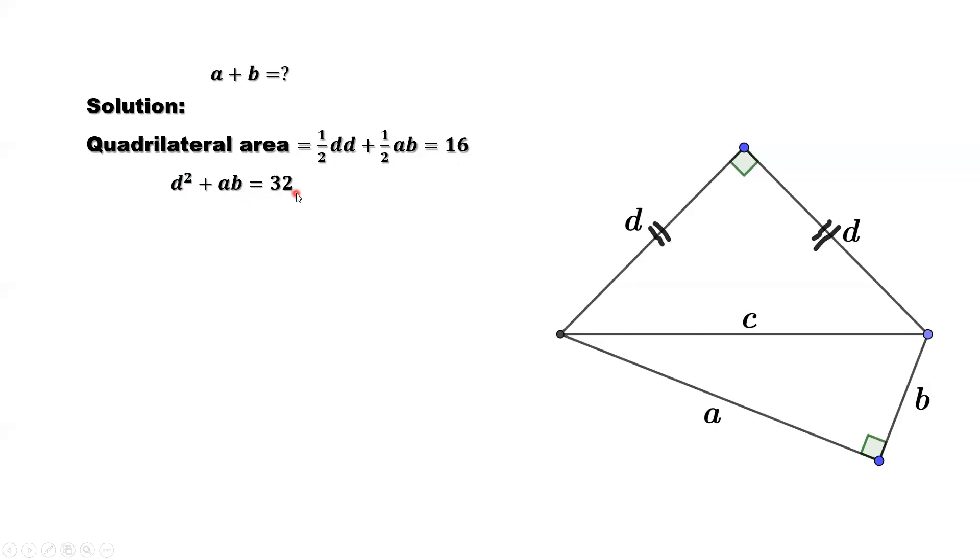What is our question? The question is, what is the sum of a plus b? In order to find a + b, we want to find (a + b)² first, because we want to use the connection between the two right triangles.